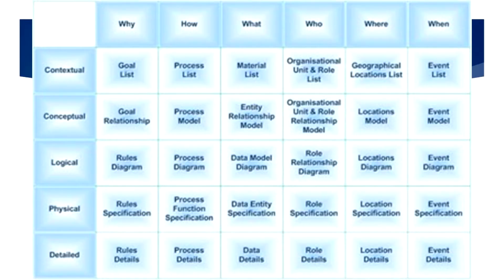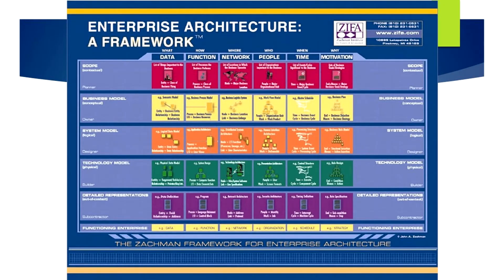As we move down the matrix, the models gain complexity. The logical view creates diagrams that give details to the models made in the previous row. The physical view drives the identification and definition of specifications that will be used in the enterprise. Lastly, the detail view creates robust explanations about specifics of the enterprise using the W5H questions as a guide for populating each cell. Going back to the previous image, we can see that complexity can be added to the framework and it can be modified to add more detail to the different views, allowing the framework to be used in a variety of use cases to define systems within the enterprise.